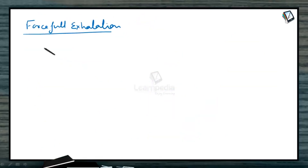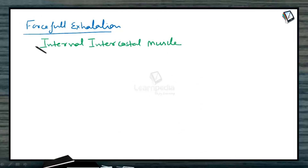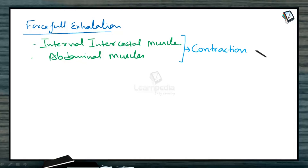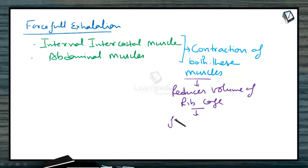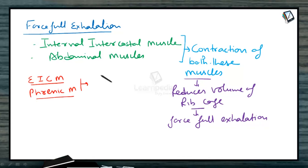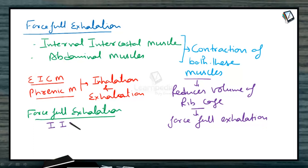During forceful exhalation, internal intercostal muscles and abdominal muscles come into operation. Contraction of both these muscles reduces the volume of the ribcage, resulting in forceful exhalation. So, external intercostal muscles and phrenic muscles are involved in inhalation and normal exhalation, while internal intercostal muscles and abdominal muscles are responsible for forceful exhalation.